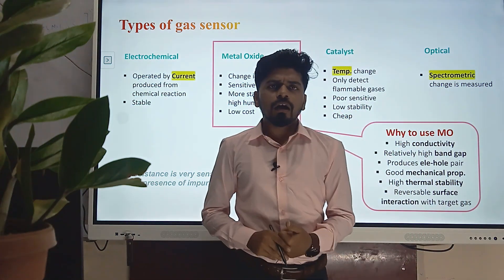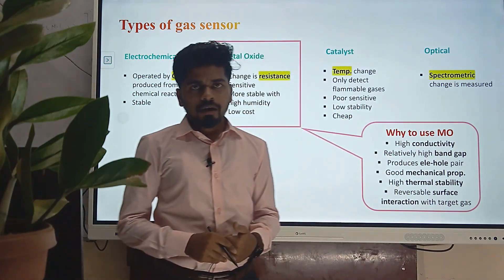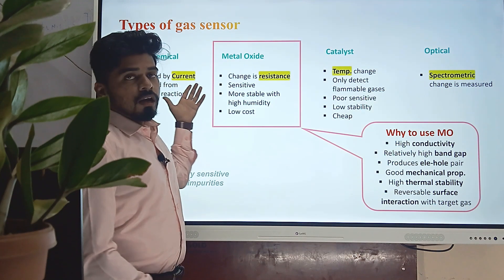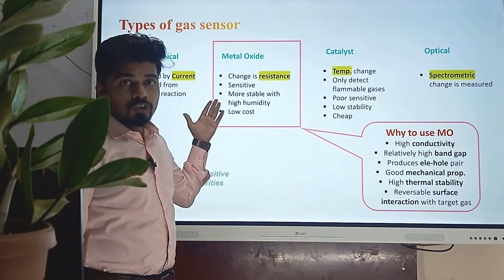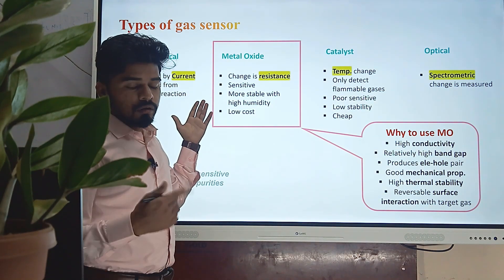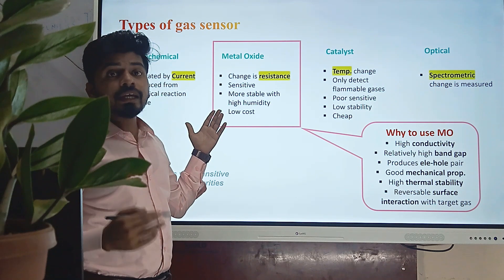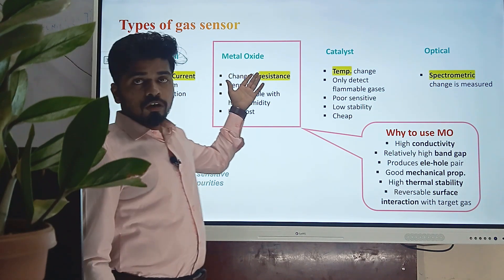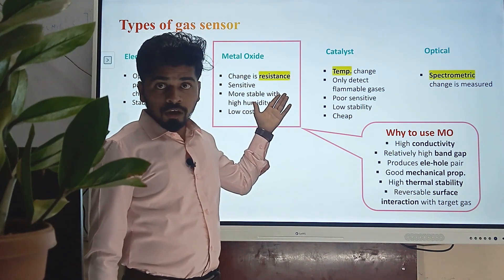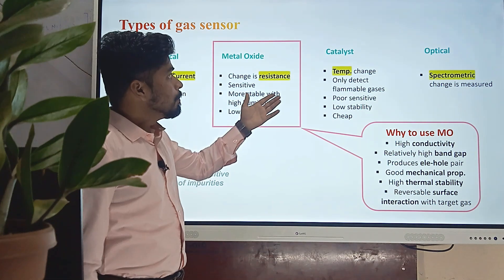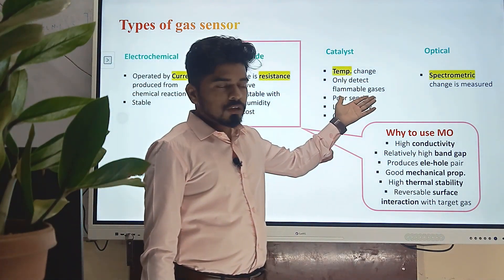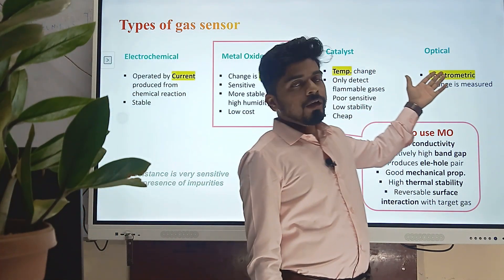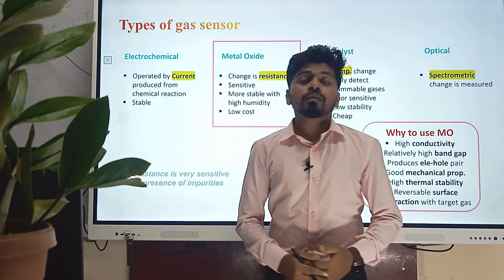There are many gas sensors available in the market: the electrochemical one, where current detection is the parameter on which the gas is detected; the metal oxide one, where resistance change is detected; the catalytic one, where temperature is detected; and optical, where spectrometric change is detected.